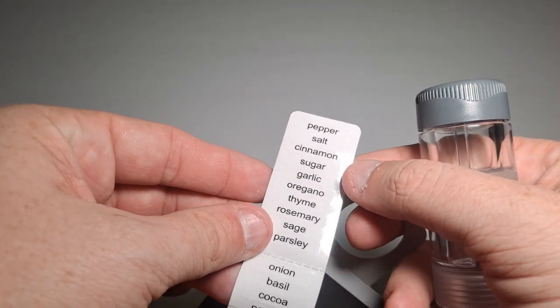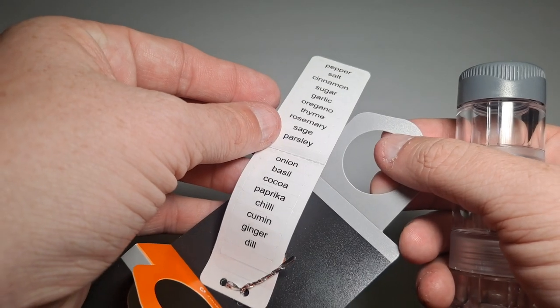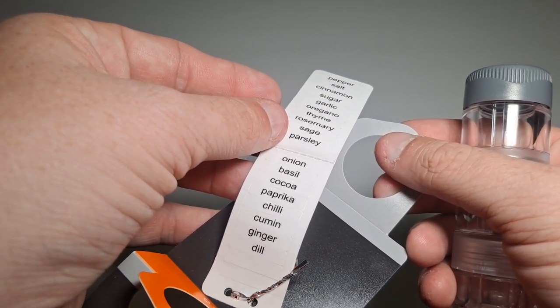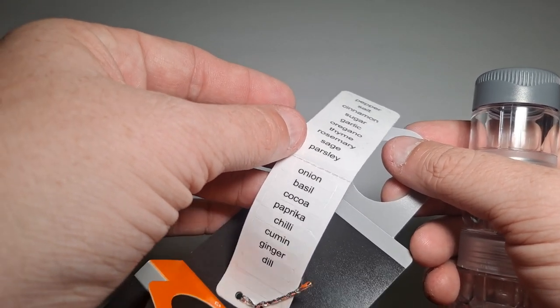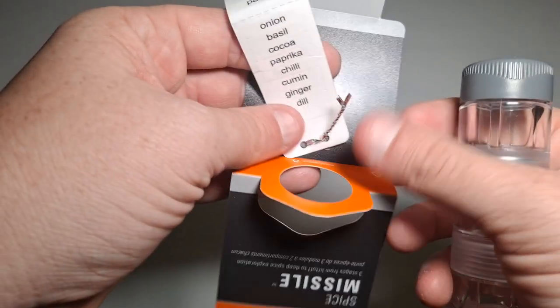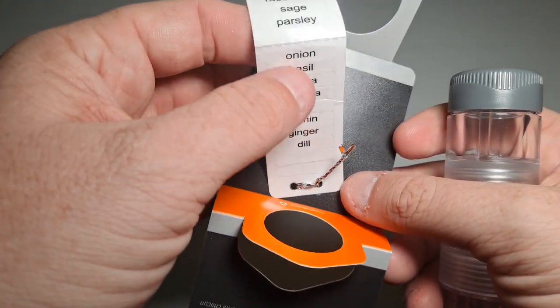It's weird because I read the whole package and it doesn't say anything on it. So you've got pepper, salt, cinnamon, sugar, garlic, oregano, thyme, rosemary, sage, parsley, onion, basil, cocoa, which is a little weird, paprika, chili, cumin, ginger, and dill.